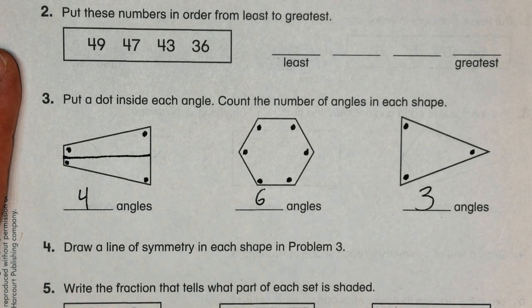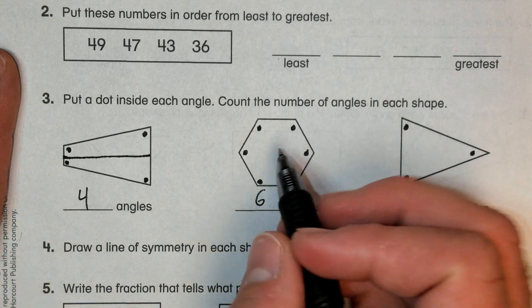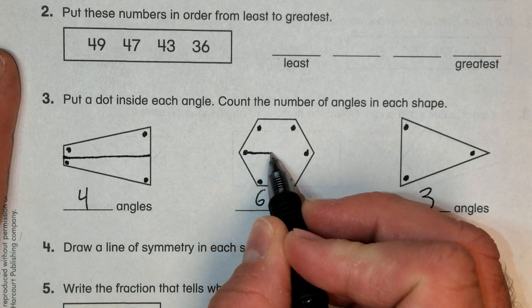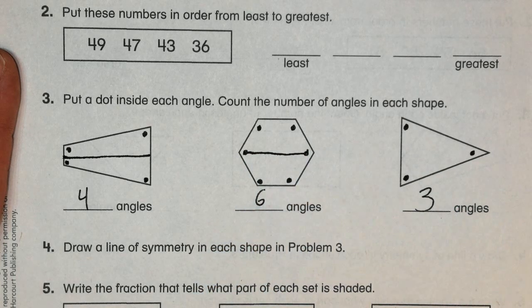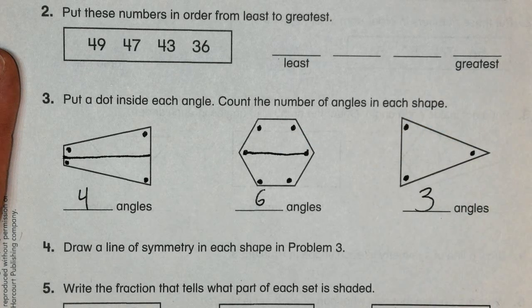My next shape that would have a line of symmetry would be this shape right here. And I would just actually do my line of symmetry from this dot to that dot because it is still equal on both sides.